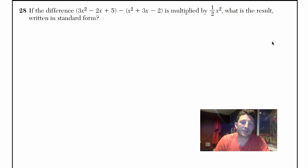All right, we're at number 28. This one says that the difference of 3x² - 2x + 5 minus x² + 3x - 2 is multiplied by ½x². What is the result written in standard form?